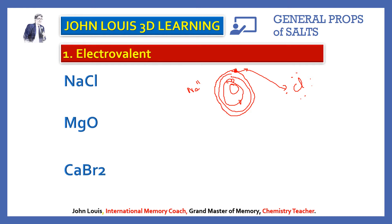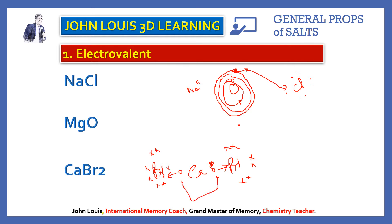Calcium has two electrons in the outermost orbit and each bromine has seven electrons in the outermost orbit. Calcium donates one electron to each bromine atom, so two electrovalent bonds are formed. Similarly for magnesium oxide: magnesium has two electrons in the outermost orbit and oxygen has six electrons. Magnesium donates its two outermost electrons to oxygen; oxygen accepts them and becomes stable, magnesium becomes stable by donating. These are all examples of electrovalent compounds.